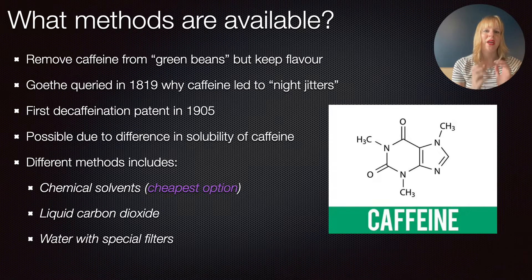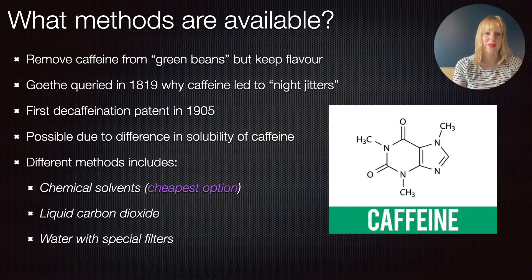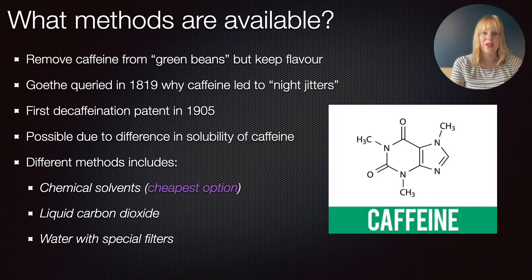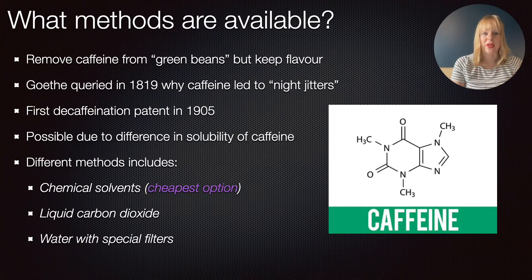How we can extract this caffeine has all to do with the difference in solubility of caffeine within the beans versus the other compounds that are present. There are three common methods to do this: we can use chemical solvents, we can use supercritical liquid carbon dioxide, and we can use water with special filters. Out of these three methods, the chemical solvent method is by far the cheapest option.